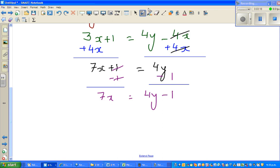Now you have to divide both sides by 7 to get rid of the 7. So x as the subject would be 4y minus 1 over 7, and this is how you make x the subject.